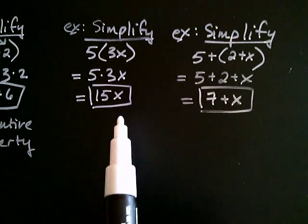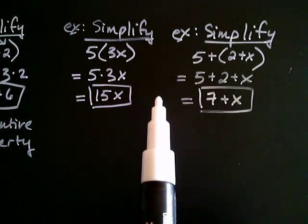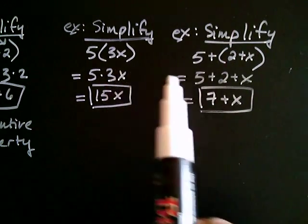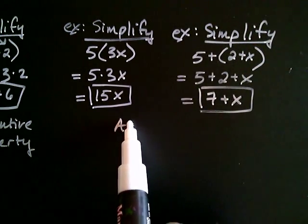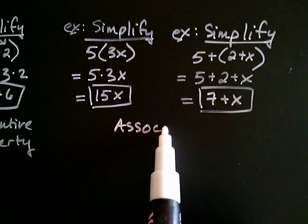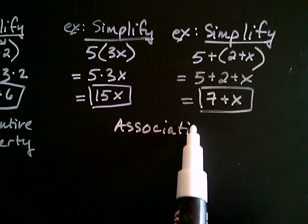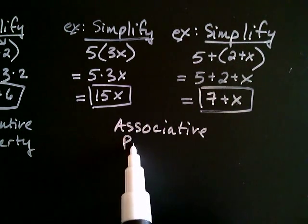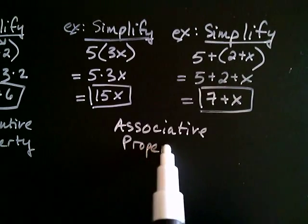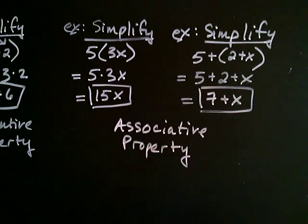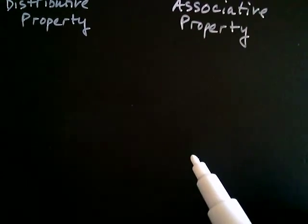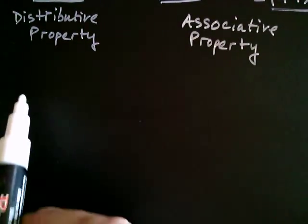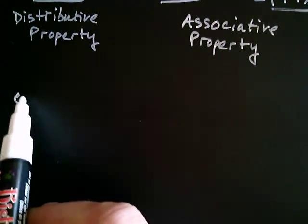So when you use these two properties — that is, when you drop parentheses in multiplication or addition — you're making use of what's called the associative property. And there's one more property in algebra that we use very frequently. So we have the distributive property, we have the associative property — let's see the final property that we're going to make use of.